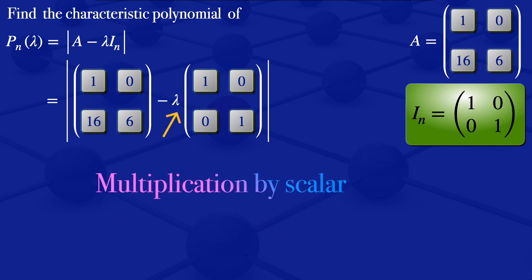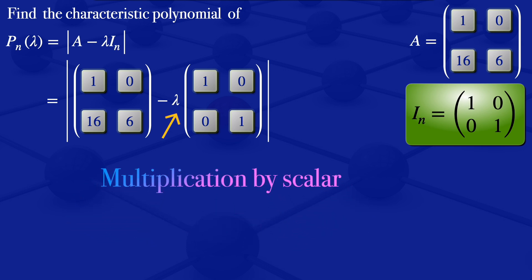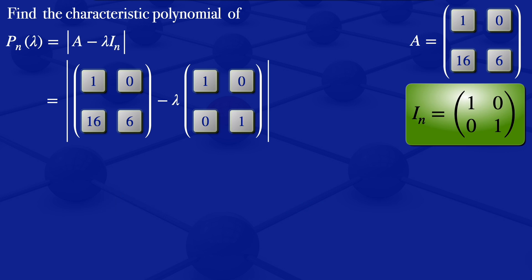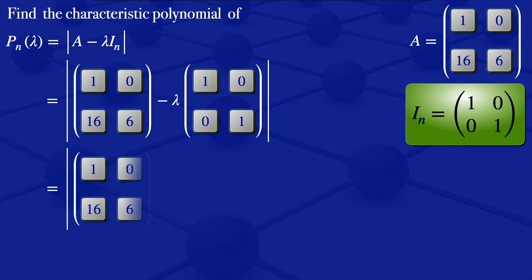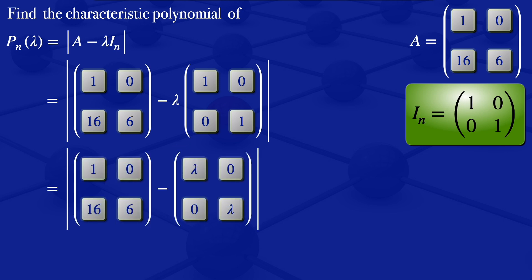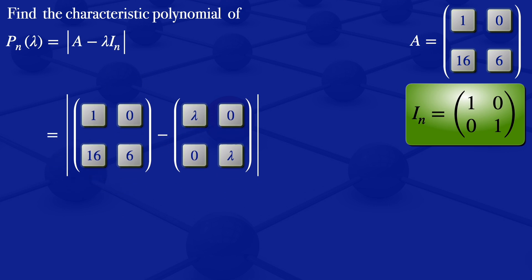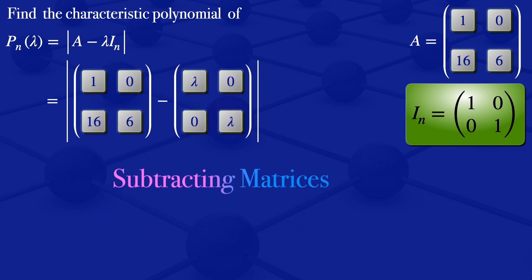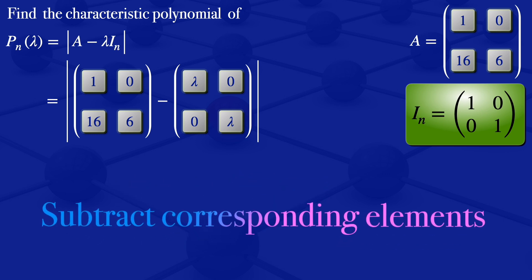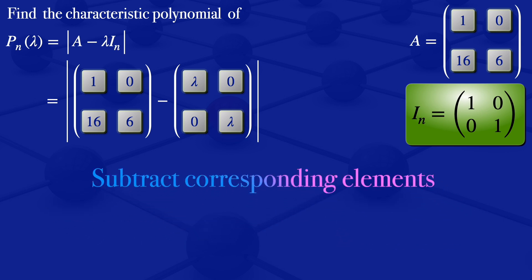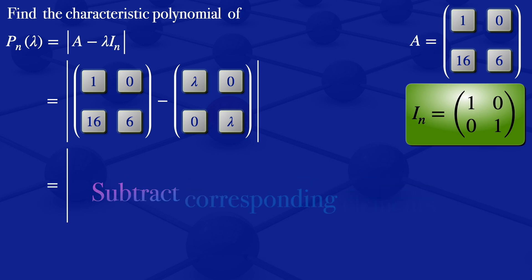What we have here is a scalar multiplication of a matrix. So we multiply every element of the identity matrix by lambda, giving us the determinant of matrix A minus the matrix which has elements lambda, 0, 0, lambda. This is just matrix subtraction, where we subtract the corresponding elements to get a new determinant.